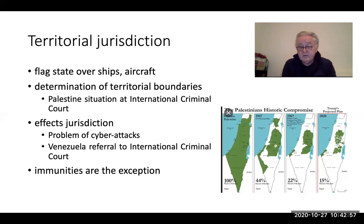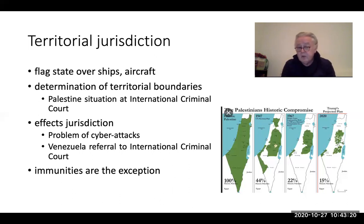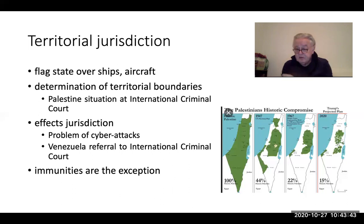The main exception to territorial jurisdiction is immunities. Various immunities exist meaning that certain crimes committed on the territory of the United Kingdom, for example, cannot be prosecuted before UK courts. The classic ones are diplomatic immunities and consular immunities, although there will also be immunities given on a case-by-case basis to visitors to the country. Also, in the situation of foreign military personnel, there may be an agreement with the United Kingdom that if foreign military personnel commit crimes on UK territory, they are subject to the jurisdiction of the state whose uniform they wear rather than the United Kingdom. But those are exceptions, and I'm going to return to them a little later in the lecture.